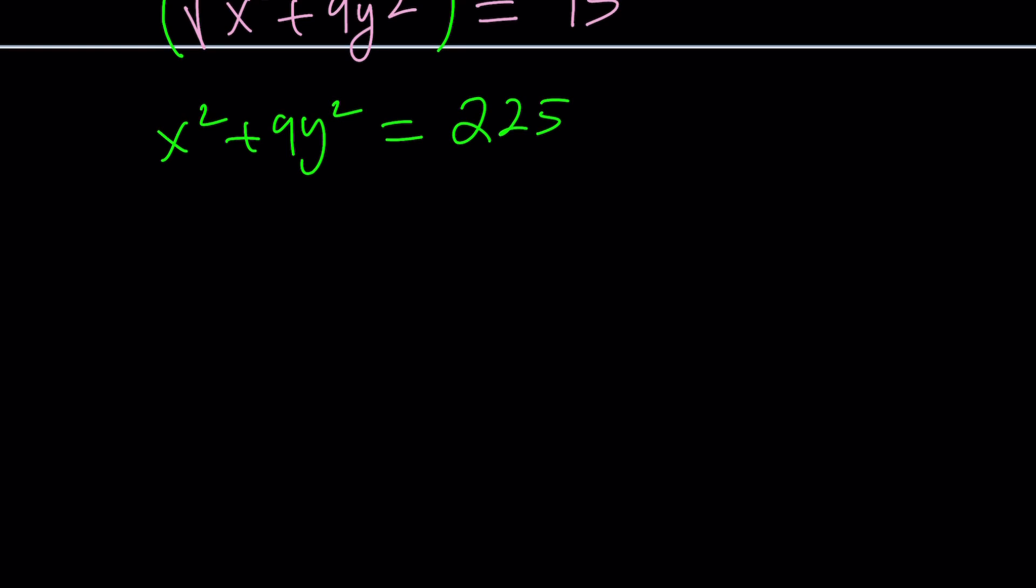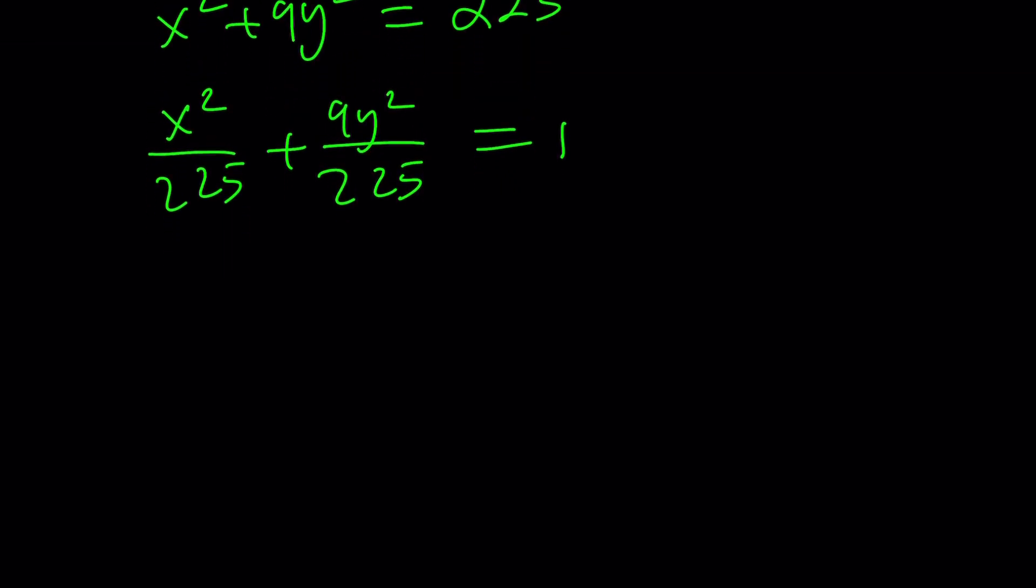Now what do you think that looks like? If you're not sure, do the following: divide everything by 225. You're going to get something like this which is going to equal 1 at the end. We could write it like x²/225 + y²/25 = 1. This is a really nice form.